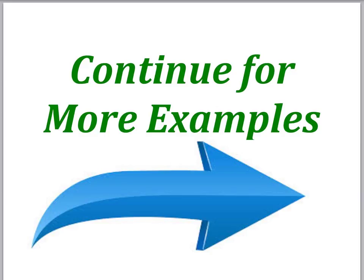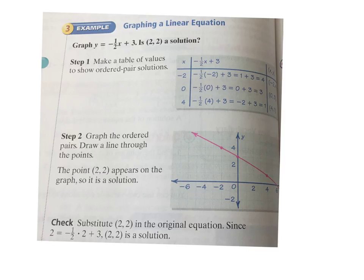Continue for more examples from me. All righty. This time, graphing a linear equation. Now, we've already practiced graphing points, so it's nothing more than that in playing connect the dots. So first thing we do here is make a table of values. So I'm giving this right here. Negative 1, y equals negative 1 half x plus 3 is 2, 2 a solution. Well, to find out, I'm going to see if 2, 2 fits in there. And you can graph to find the solution if you wish.